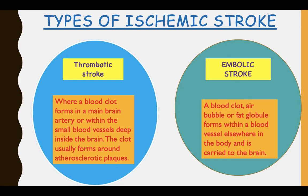Moving on to the types of ischemic stroke. Thrombotic stroke is where a blood clot forms in the main brain artery or within the small blood vessels deep inside the brain. The clot usually forms around atherosclerotic plaques.